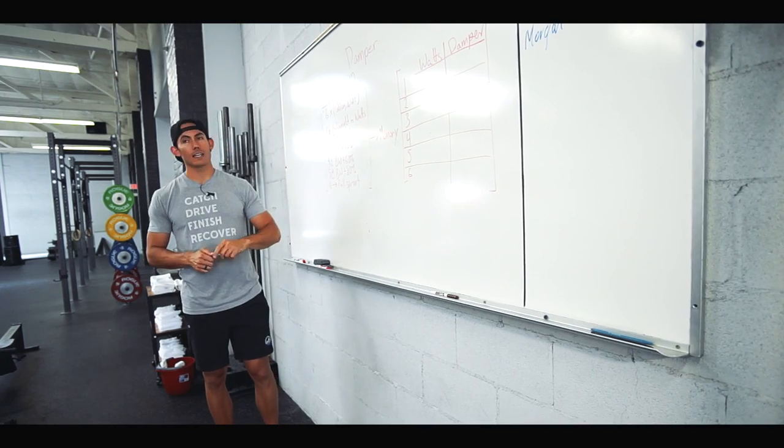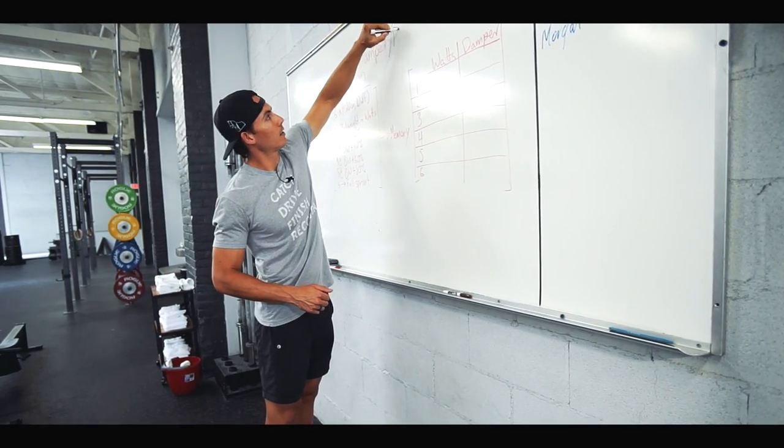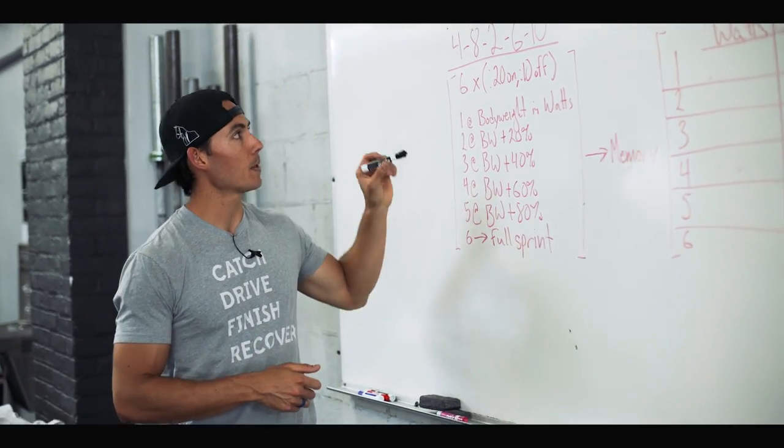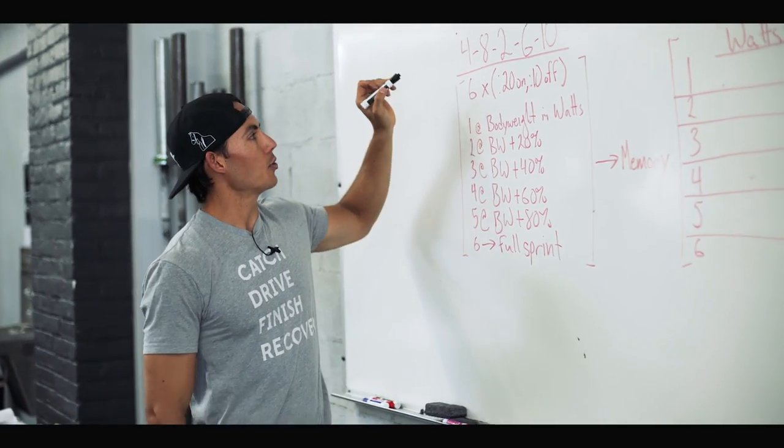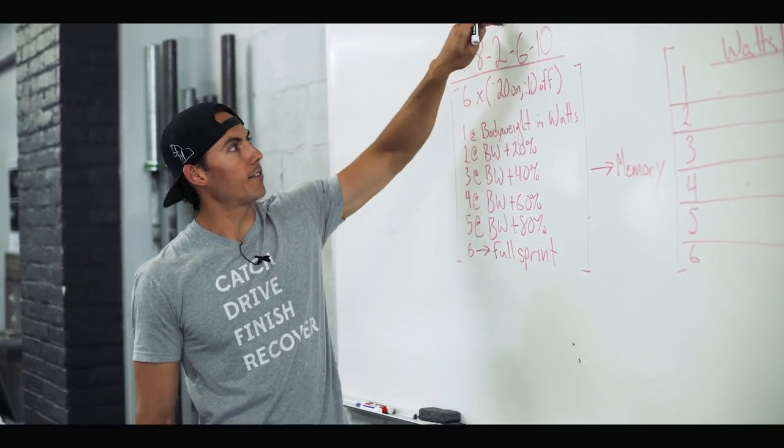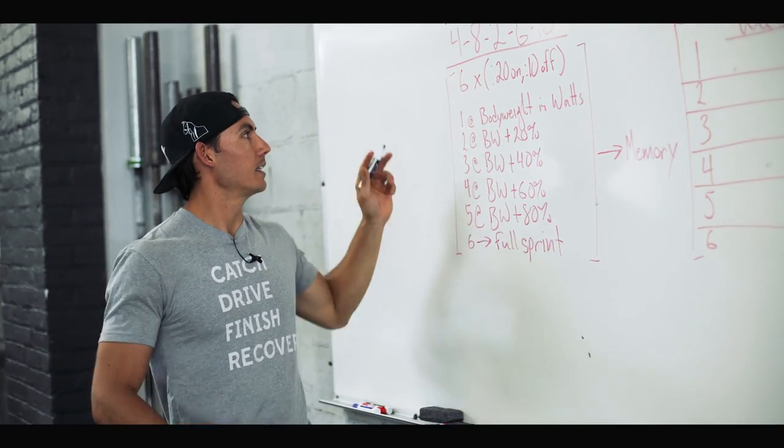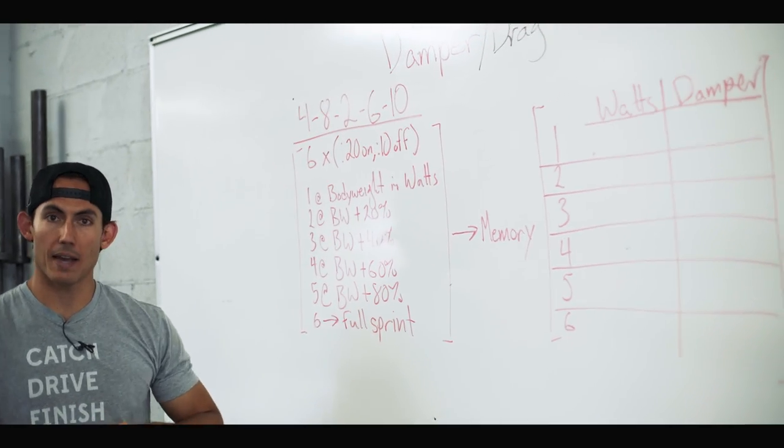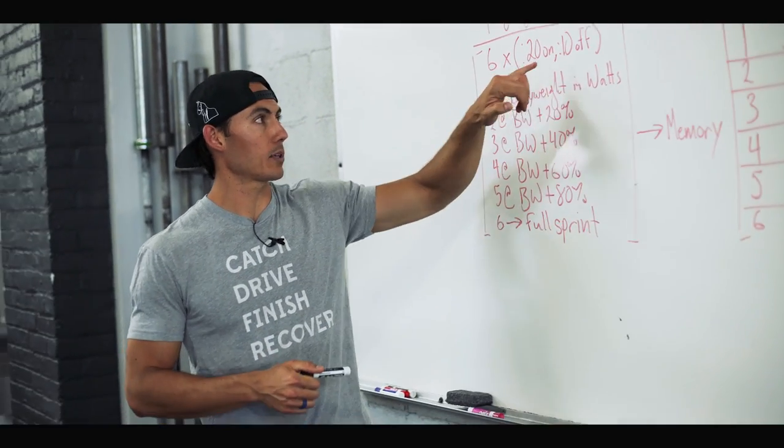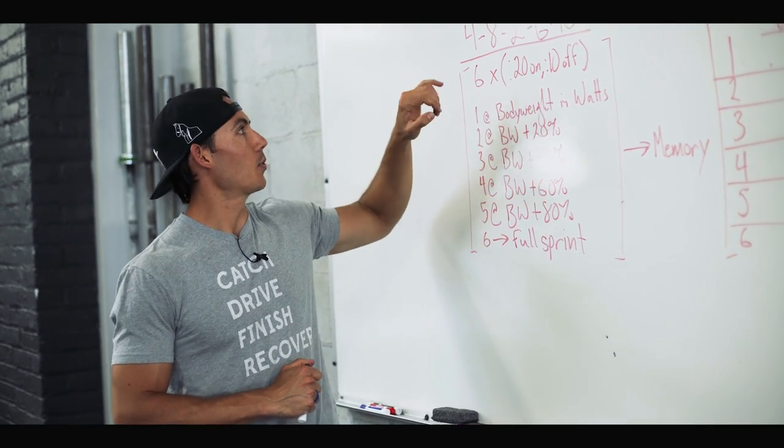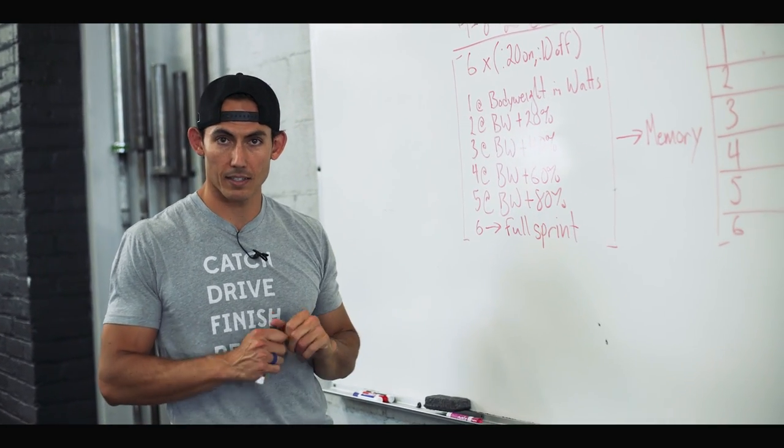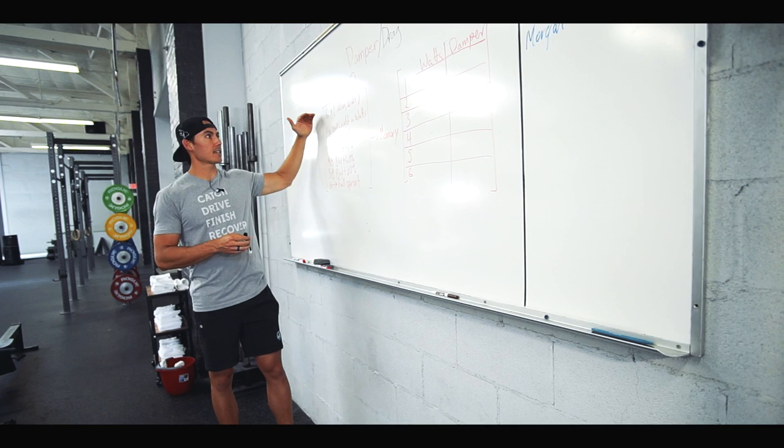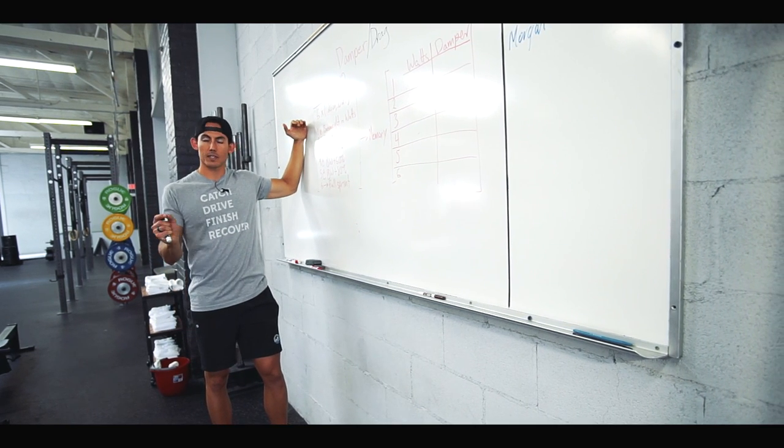This workout is a damper and drag factor deciding workout to help you figure out where you work best. You are going to run five sets of six rounds of 20 seconds on, 10 seconds off. This is a typical tabata interval. Six rounds equals three minutes, and you'll do five rounds of three minutes.